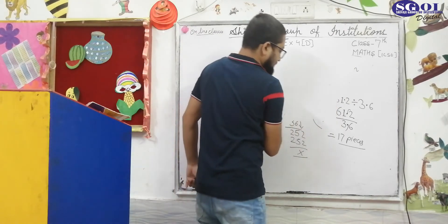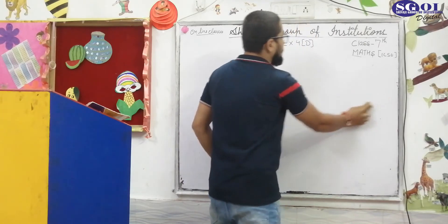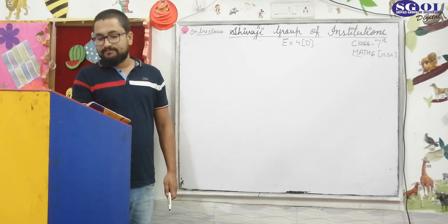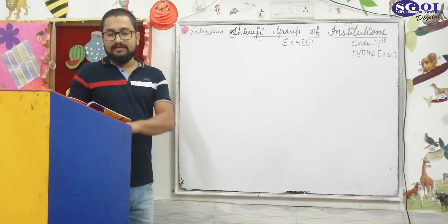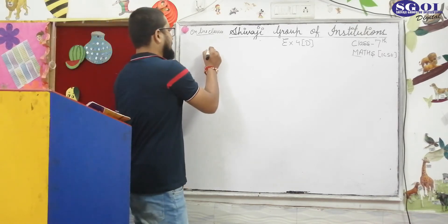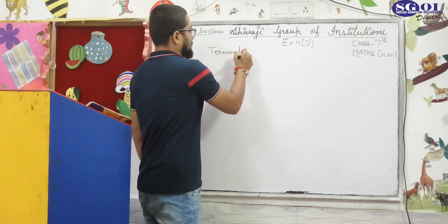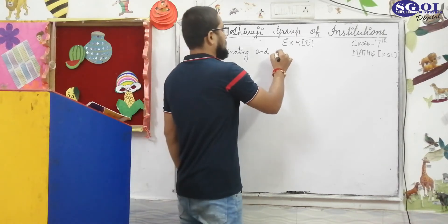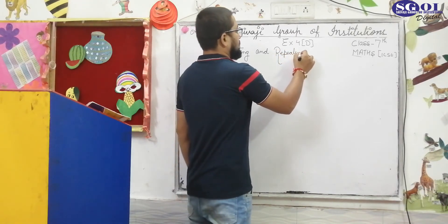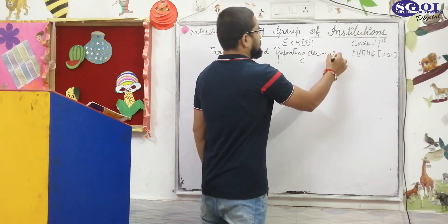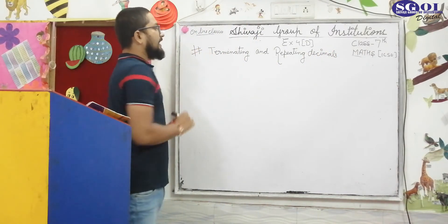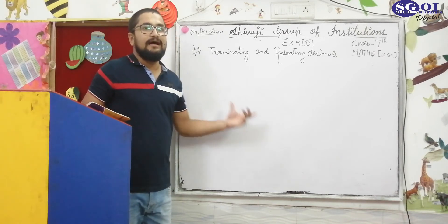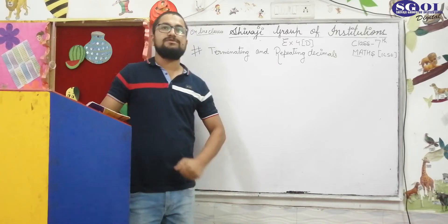Let's learn some theory of the next exercise, and the questions I will start discussing from our next class. So in our next exercise, that is exercise 4E, the heading is terminating and repeating decimals. This is a very important part of the chapter on decimals. I will require you to pay a lot of attention while understanding the concept of terminating and repeating decimals.